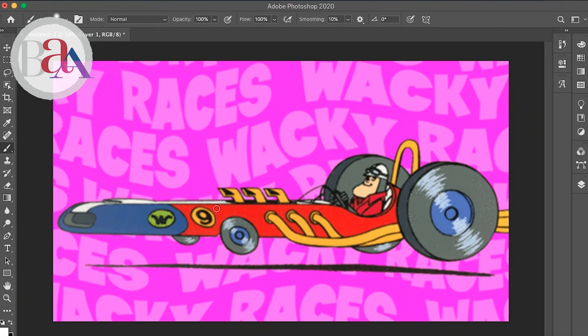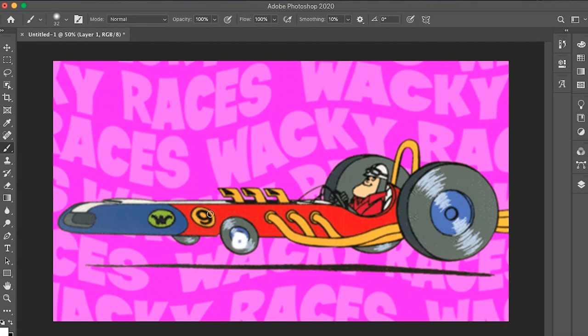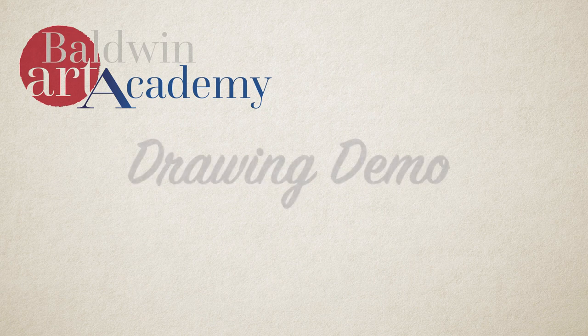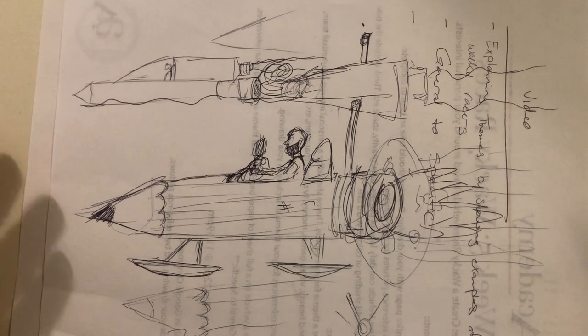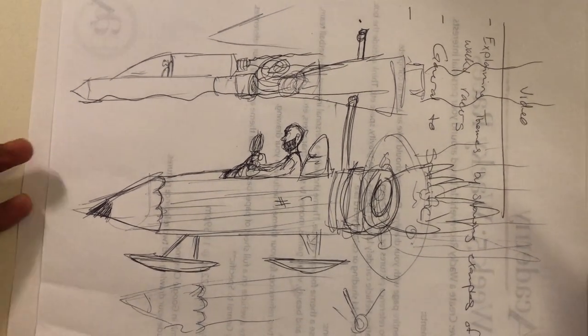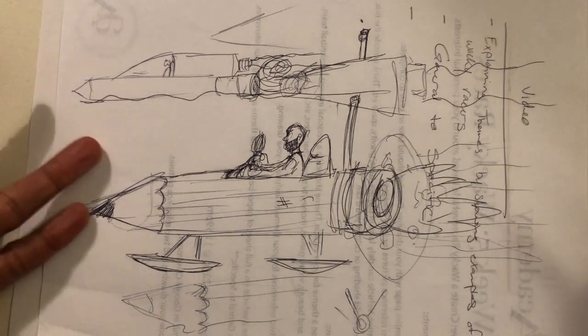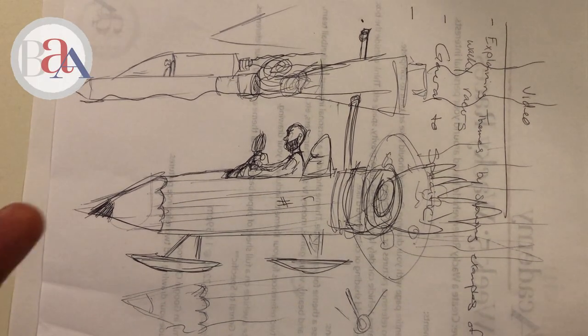You just start with the big shapes first, and then all of this little detail stuff, like the little designs and the numbers and the engine and the steering wheel, all of that stuff comes last. But you start off just with your basic shapes. You get those on there, get the right size, and then you start to add the little details and stuff in there later. Okay. So that's that. So let's do a demonstration.